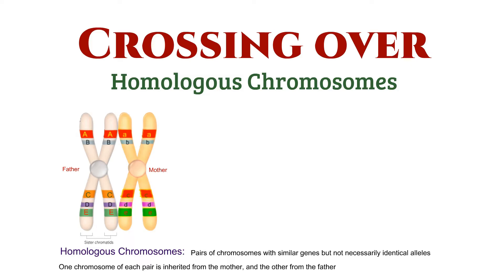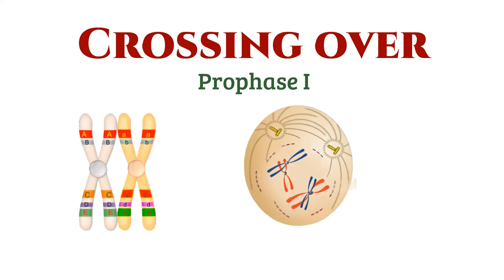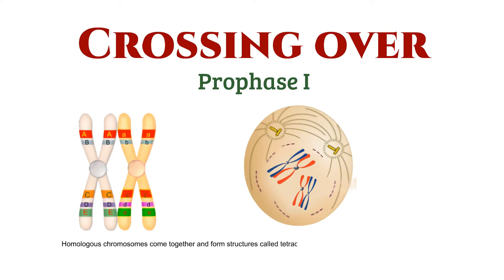Now, let's zoom in on the early stage of meiosis — prophase 1. This is where the magic of crossing over begins. Homologous chromosomes come together and form structures called tetrads.